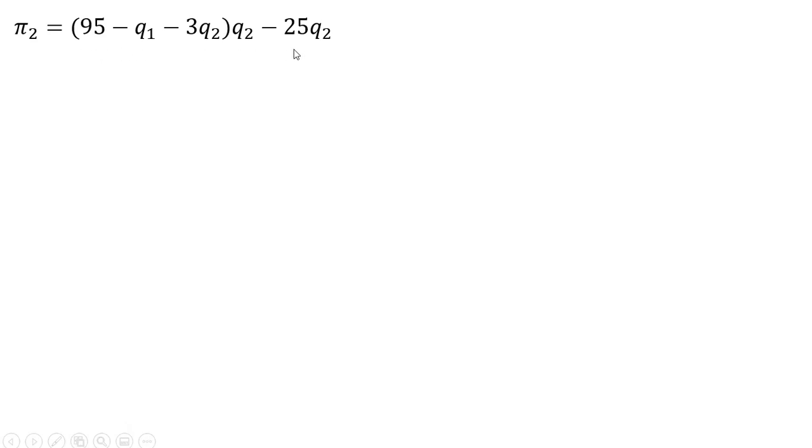Rewriting firm 2's profit function, here we're going to take the partial derivative of this profit function with respect to firm 2's output, and we get back the following result. We're going to solve this now for Q subscript 2. So 95 minus 25 is where the 70 is coming from. Dividing through by 6 and moving some things around, we have firm 2's reaction function.